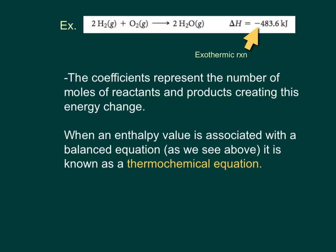An example of this would be if I took two moles of hydrogen gas, reacted with one mole of oxygen gas, and formed two moles of water vapor. The enthalpy change when this happens is stated beside the chemical equation — it is negative 483.6 kilojoules. The negative symbolizes that this is an exothermic reaction. The coefficients represent the number of moles of reactants and products creating this exothermic energy change. When an enthalpy value is associated with a balanced equation, we call this a thermochemical equation.